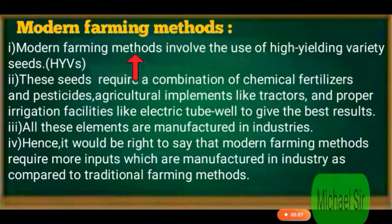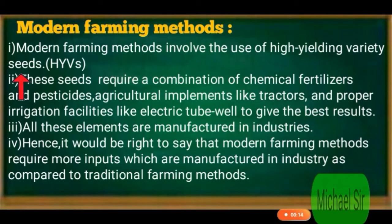Modern Farming Methods — First: Modern Farming Methods involve the use of high yielding variety seeds. Modern Farming Methods में उच्च कोटि के बीजों का उपयोग किया जाता है।